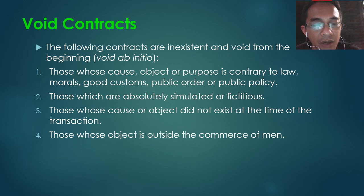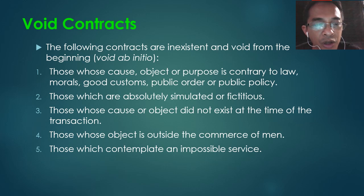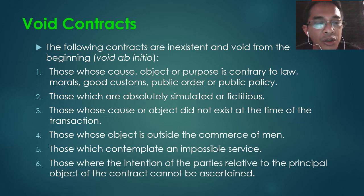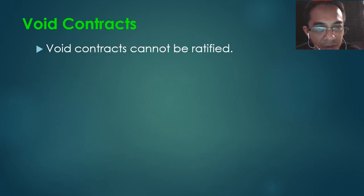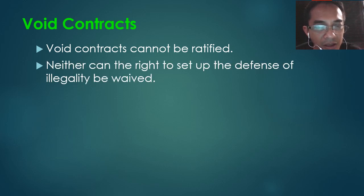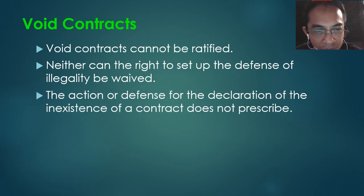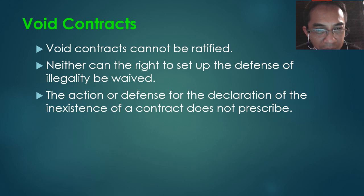Also void: those where the object is outside the commerce of man; those which contemplate an impossible service; those where the intention of the parties cannot be ascertained; and those expressly prohibited by law. Void contracts cannot be ratified because there is no contract at all — there is nothing to ratify. The right to set up the defense of illegality cannot be waived. The action or defense for declaration of a void contract does not prescribe — you can go to court anytime, even after a million years.